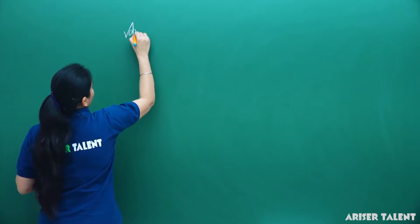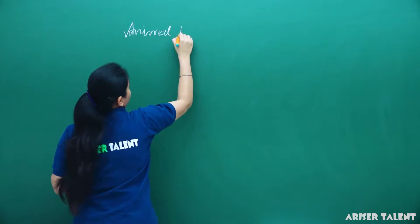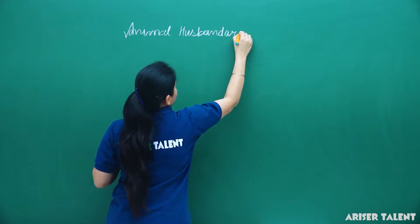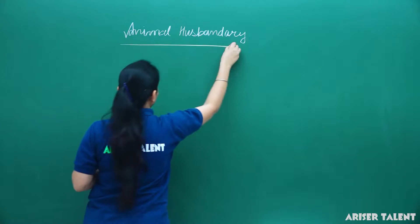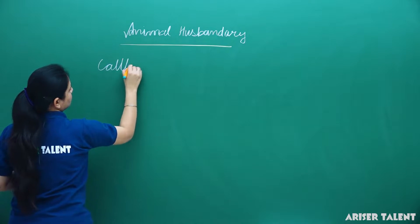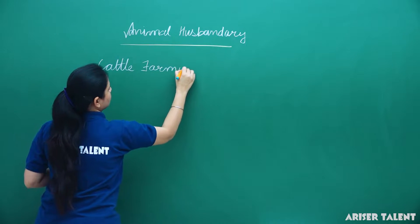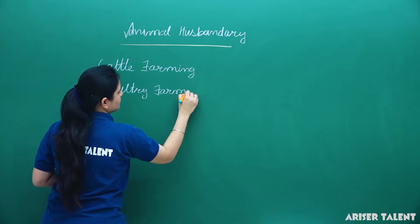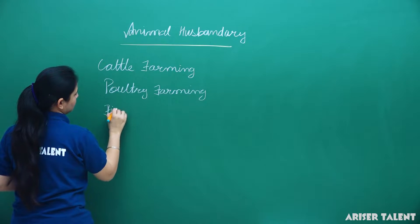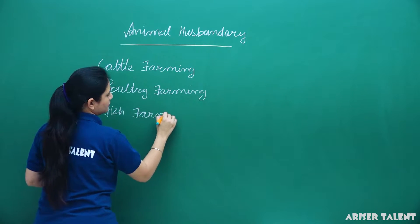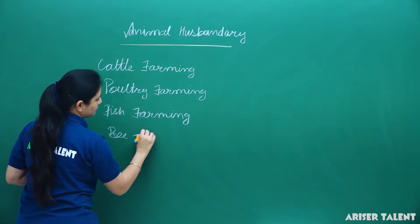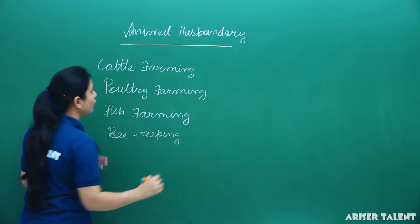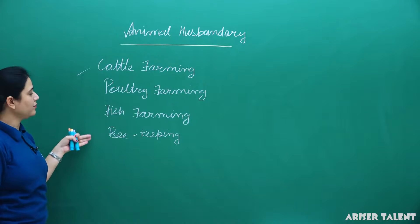Hello friends, welcome to Arise a Talent. We are studying the topic 'Improvement of Food Resources,' specifically animal husbandry. In animal husbandry, there are four parts: cattle farming, poultry farming, fish farming, and beekeeping. We have already studied cattle farming; now we will discuss poultry farming, fish farming, and beekeeping.